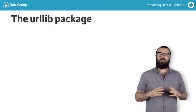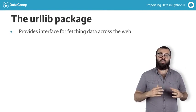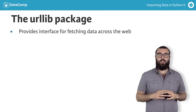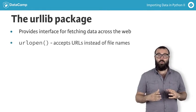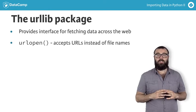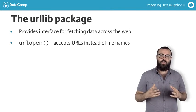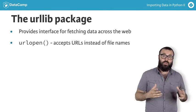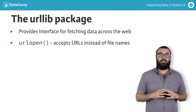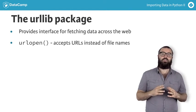This module provides a high-level interface for fetching data across the World Wide Web. In particular, the urlopen function is similar to the built-in function open, but accepts universal resource locators — URLs — instead of filenames.